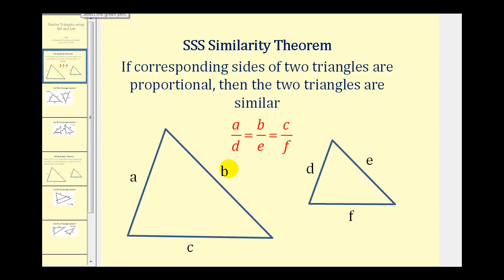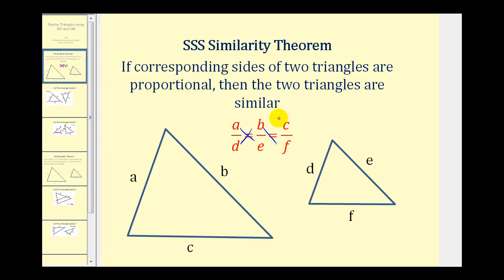If we're trying to show that two triangles are similar using side-side-side similarity, there are two ways to verify this proportion. One way would be to simplify each ratio and make sure they are all equal. If you have difficulty simplifying fractions, you could also cross-multiply to make sure the cross products are equal — meaning A times E must equal B times D, B times F must equal C times E, and A times F must equal C times D.